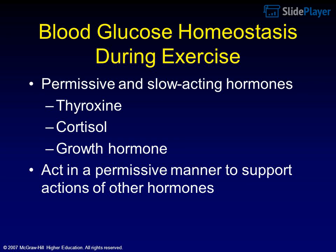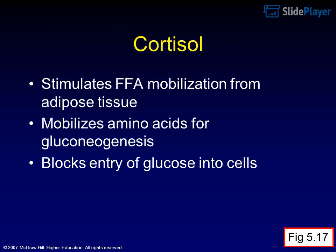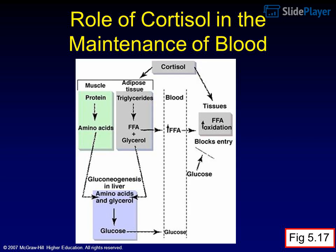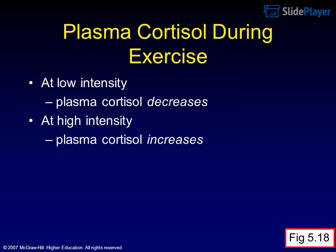Permissive and slow-acting hormones include thyroxine, cortisol, and growth hormone. These act in a permissive manner to support the actions of other hormones. Cortisol stimulates FFA mobilization from adipose tissue, mobilizes amino acids for gluconeogenesis, and blocks entry of glucose into cells.